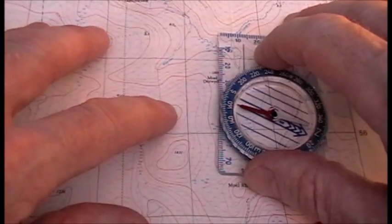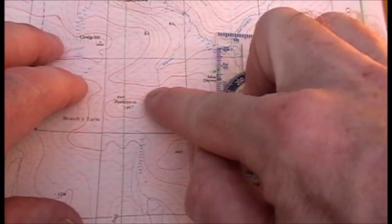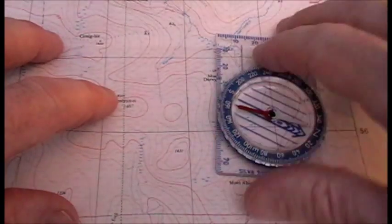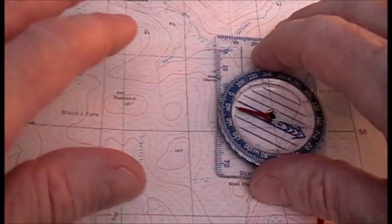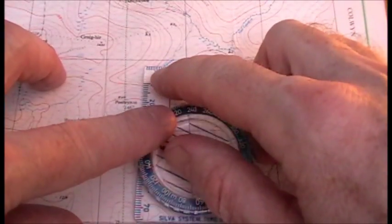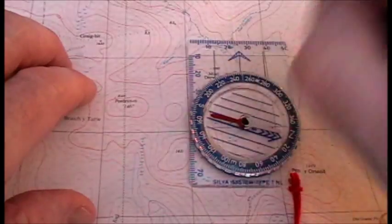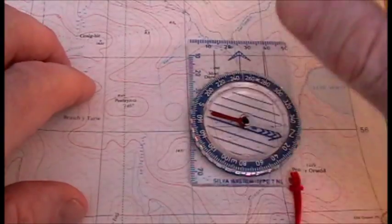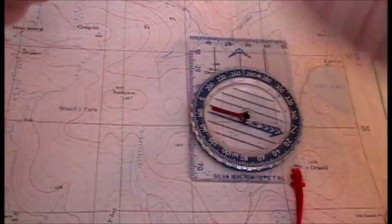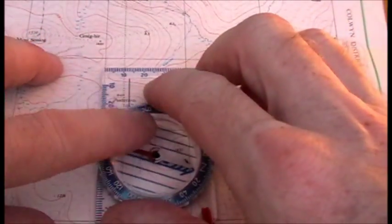And the same thing with a 1 to 50,000 map: one unit of measure on the map is equal to 50,000 units of measure on the actual ground. One centimeter on the map is equal to 50,000 centimeters on the actual ground, or 500 meters or half a kilometer.